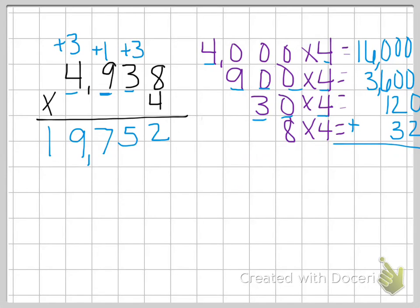2. Then I have 2 and 3, which gives me 5. 6 and 1 is 7. 6 and 3 is 9. And the 1. So 19,752. So just decide which way you like the most and do whatever method is more comfortable for you.